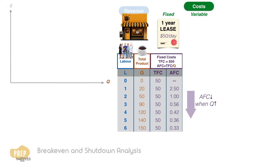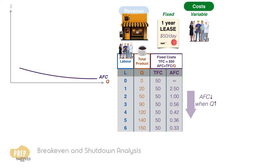Obviously, as the number of coffees served increases, the average fixed cost decreases. If we plot the average fixed cost against the quantity produced, we get a downward sloping line. Variable costs vary according to the level of production. For simplicity, we consider labor costs as the only variable cost for your cafe — that is, you're able to hire and fire without delay.